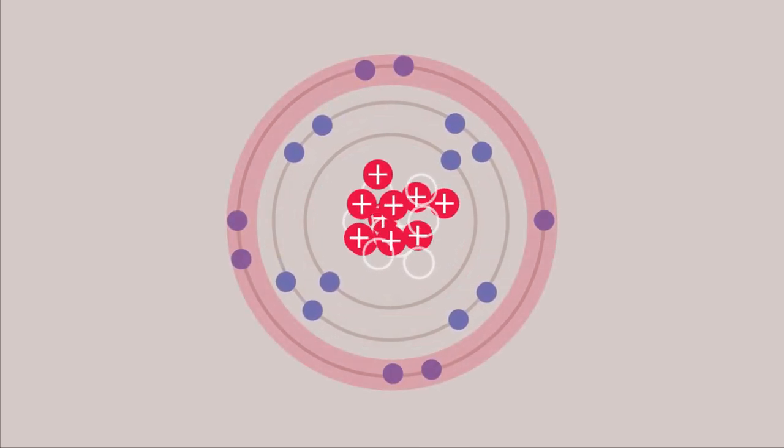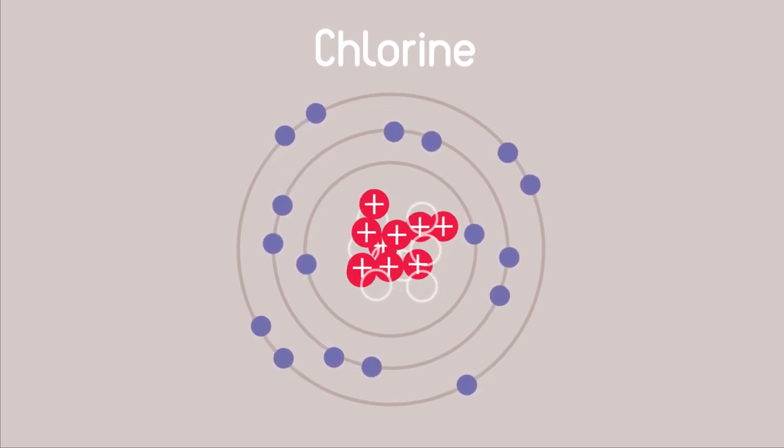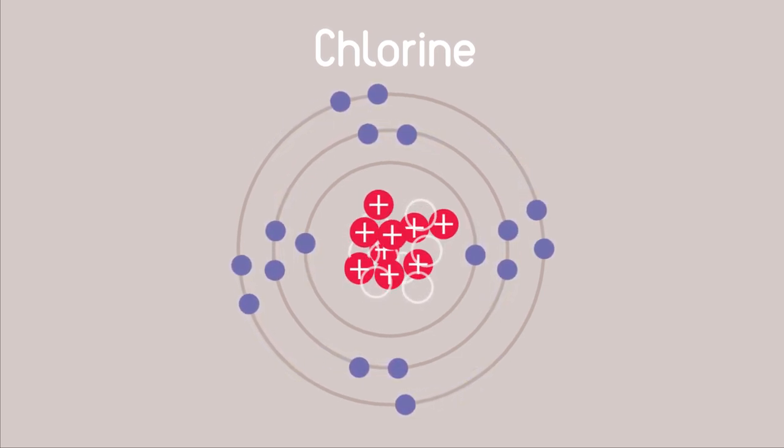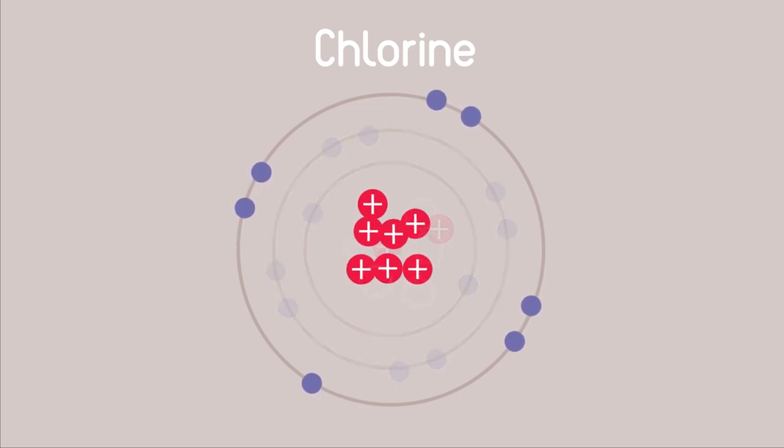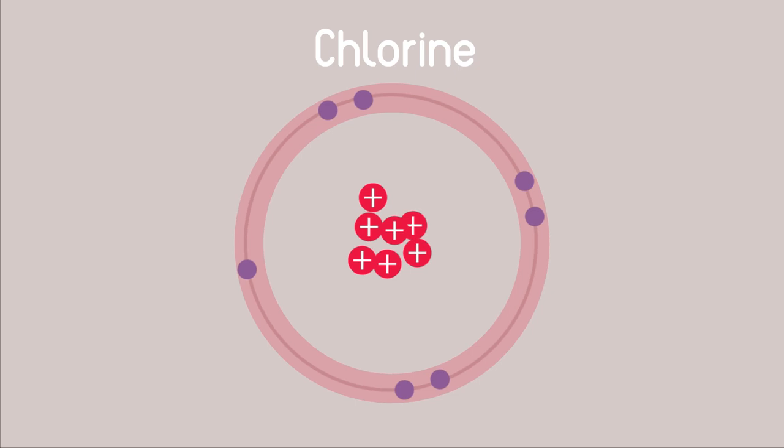Thus, in chlorine, the inner ten electrons will cancel out or neutralize the effect of ten of the protons, so the outer seven electrons feel an effective charge of just seven plus holding them in their outer shell.